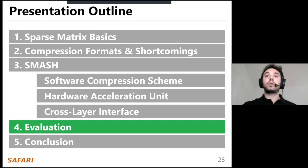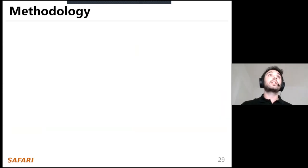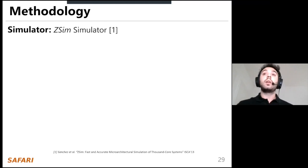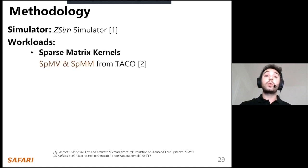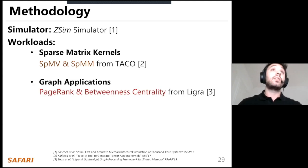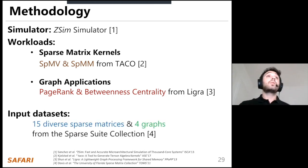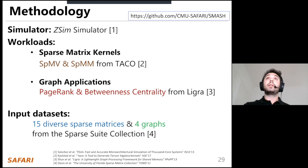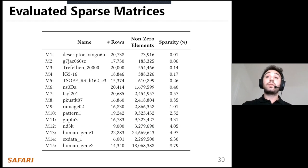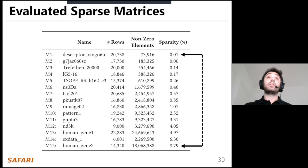Now let's go into the evaluation section. We use the ZSim microarchitectural simulator. For workloads, we use the sparse matrix kernels SPMV and SPMM from the open-source TACO library, and we also evaluated graph applications like PageRank and Betweenness centrality from LIGRA, formulated as SPMV and SPMM. For input datasets, we use 15 diverse sparse matrices and four graphs from the SuiteSparse collection, with sparsity ranging from 0.01% up to 8.79%.